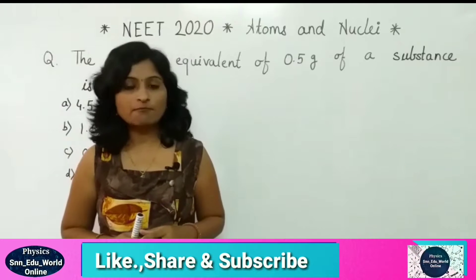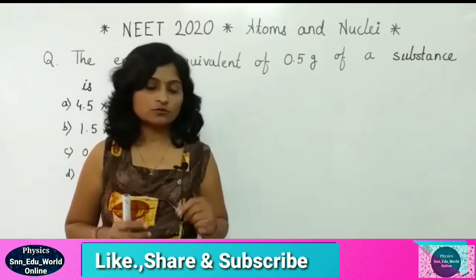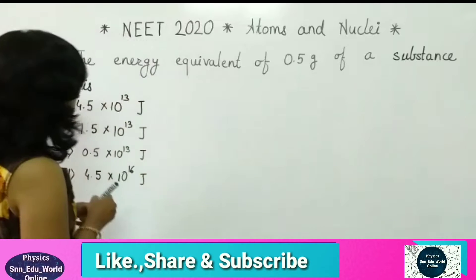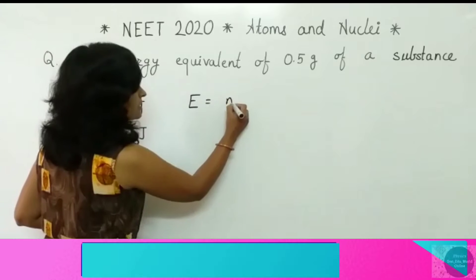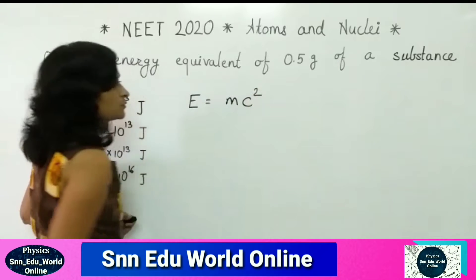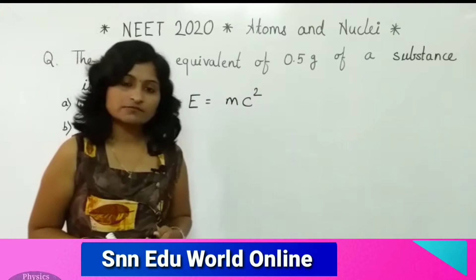So it is a simple mass energy relation. We know what is mass energy relation. From Einstein's equation we can tell directly it is E equals mc squared. So it is very simple concept.